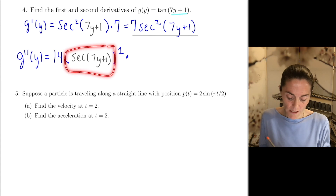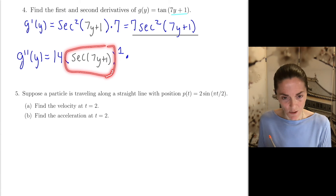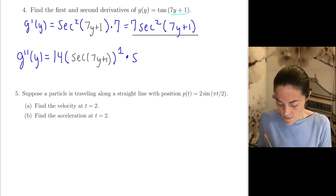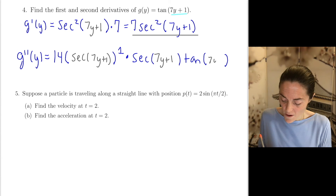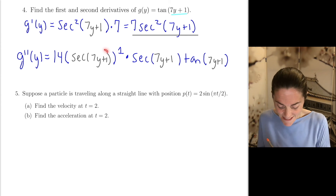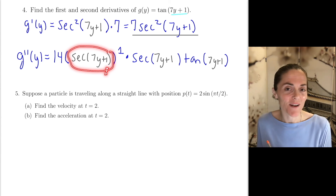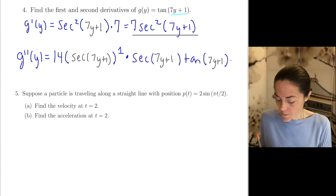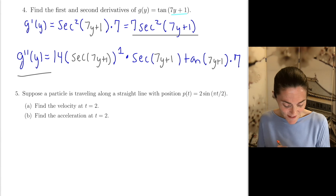Just as I was saying, we have chain rule again. To differentiate secant of 7y+1, this is chain rule. First we take the derivative of secant, which is secant tangent, and we evaluate at the inside function 7y+1 and 7y+1. Then multiply by the derivative of the inside function — another times 7, because the derivative of 7y+1 is 7. This looks great — this is our second derivative right here.